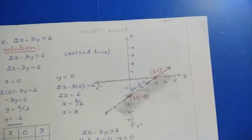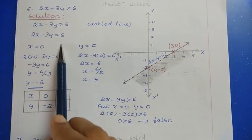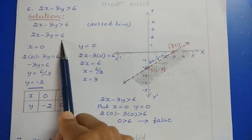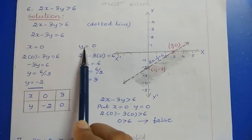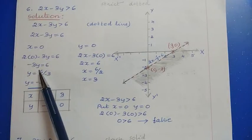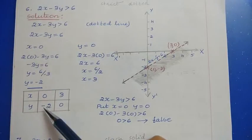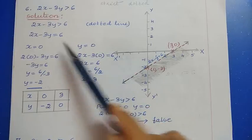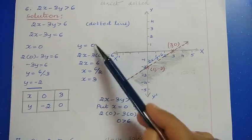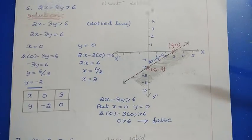Next, question 6: 2x minus 3y greater than 6. Convert the inequality to equality: 2x minus 3y equals 6. If x equals 0, then minus 3y equals 6, so y equals minus 2. If y equals 0, then 2x equals 6, so x equals 3. The two points are (0, -2) and (3, 0).